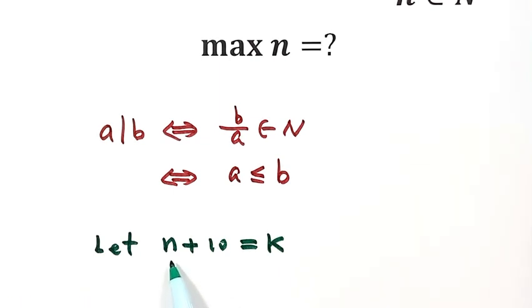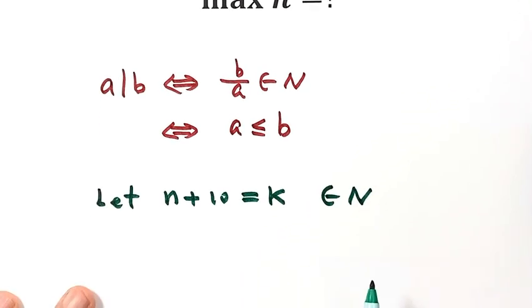Because n is a positive integer, then k is also a positive integer. So now let's solve for n. Then n equals k minus 10.